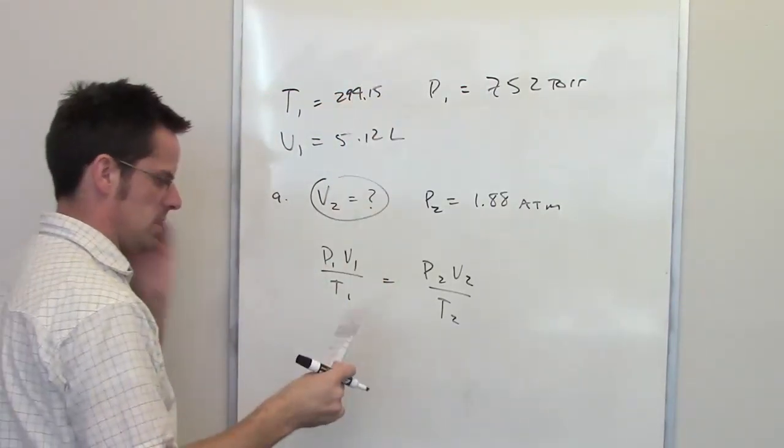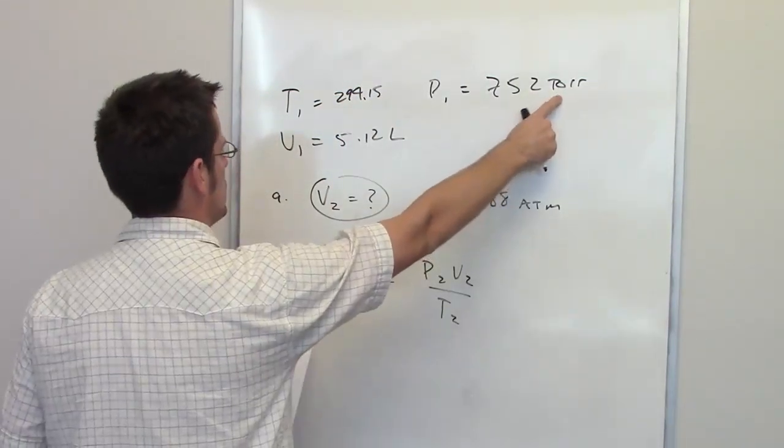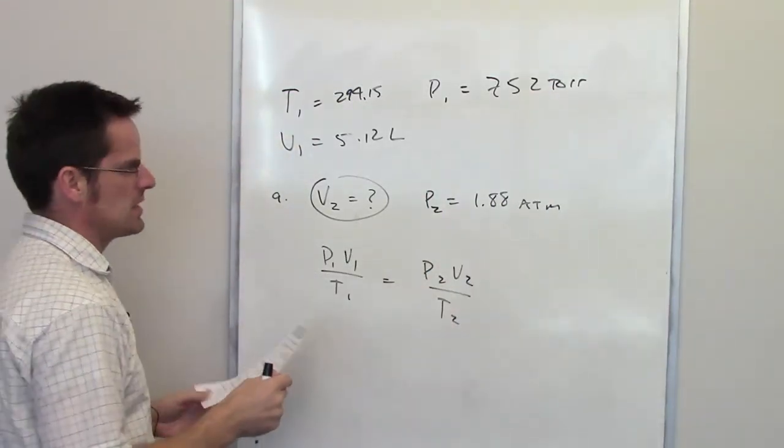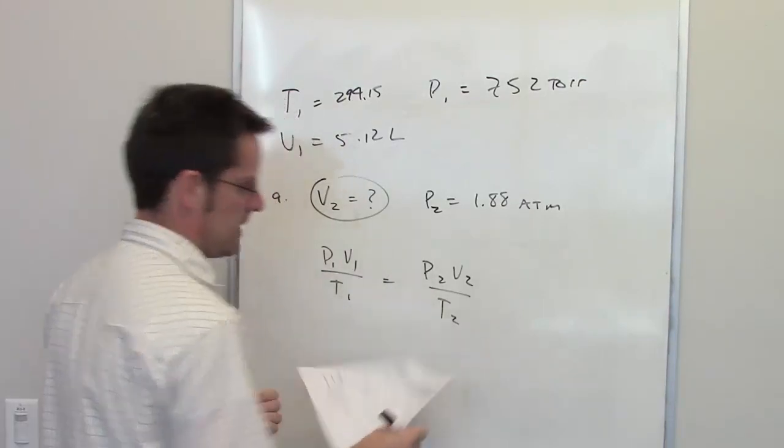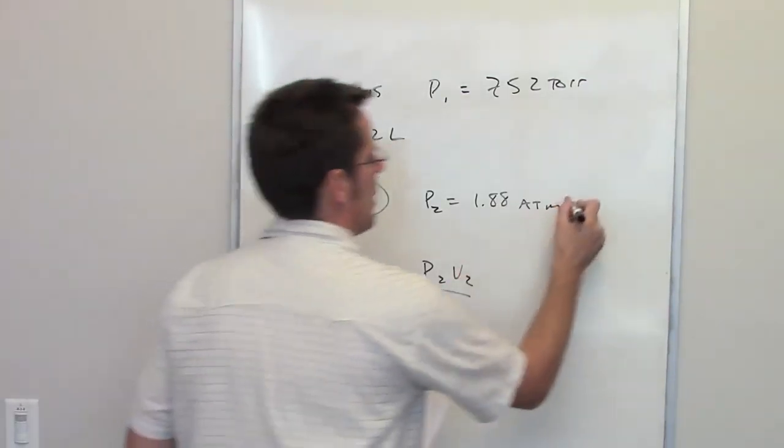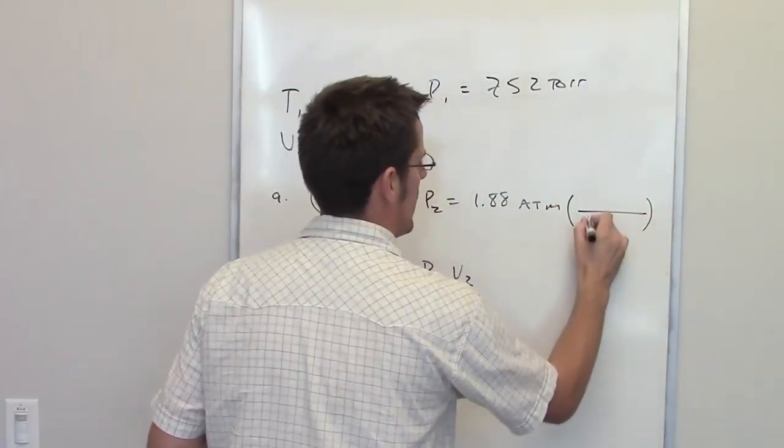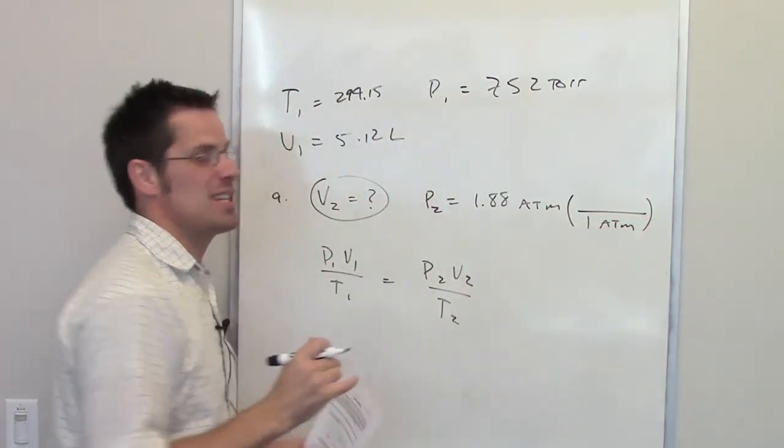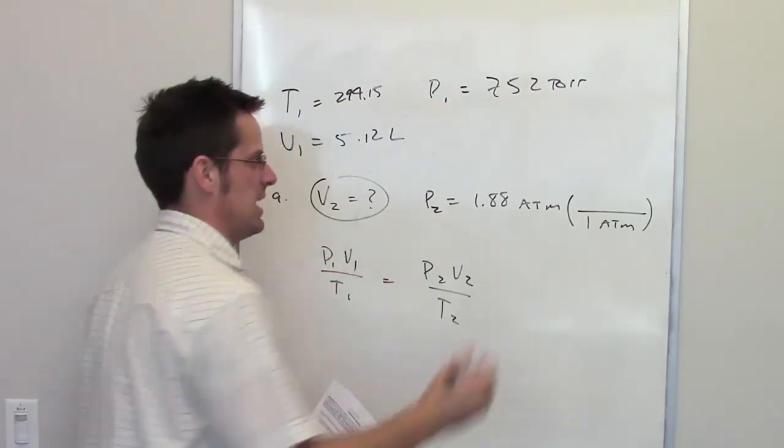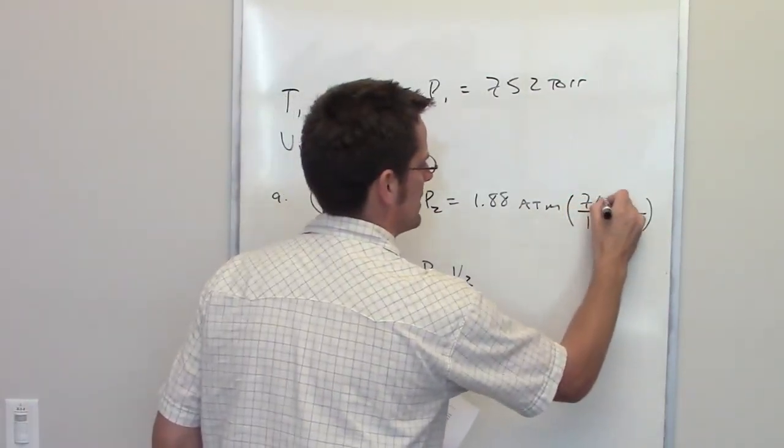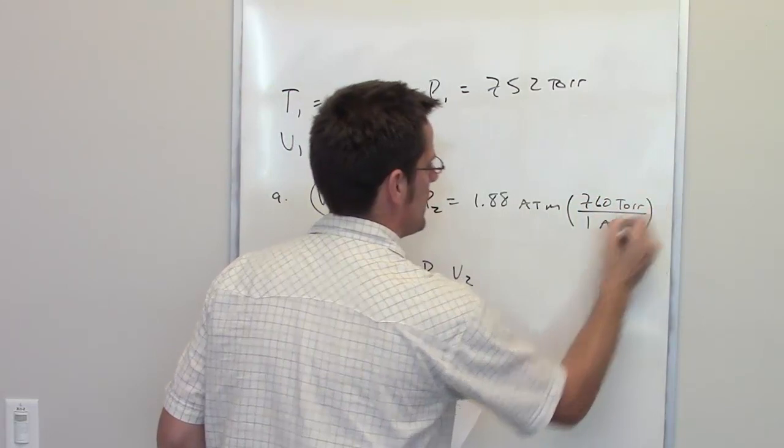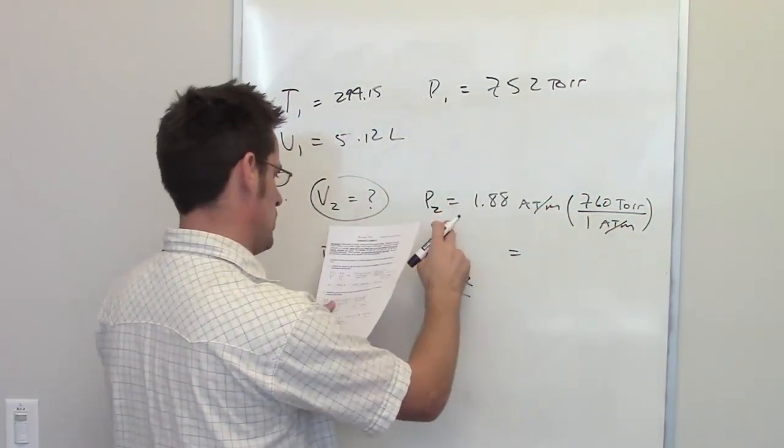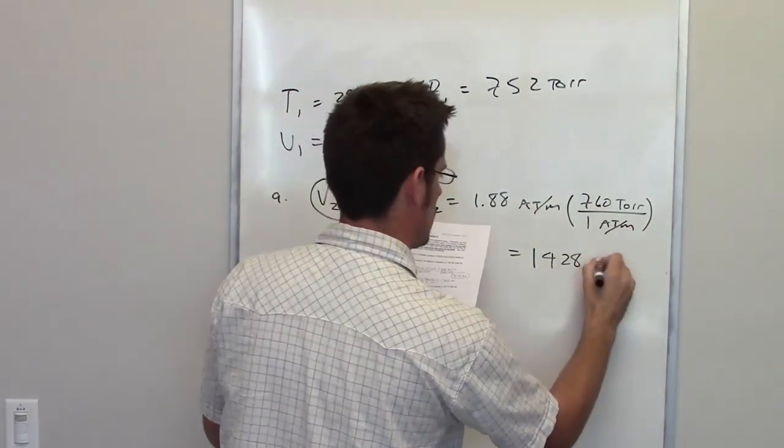We also want to make sure that our pressure units match. I've got Tor here and I've got Atmosphere here. I'm not certain if it would actually make a difference which of those you'd use. However, for the fun of it, I'm going to keep everything in Tor. I've asked you to memorize that one atmosphere is equal to 760 millimeters of mercury. Guess what? A Tor and a millimeter of mercury, same thing. So it's one atmosphere is equal to 760 Tor. You throw that in your calculator, the atmospheres cancel each other out. You'll discover that pressure 2 ends up equaling 1428 Tor.